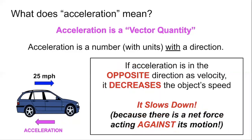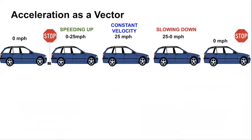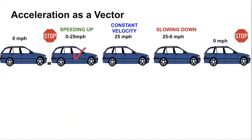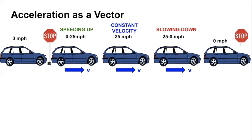Let's apply this. Here's our familiar example of a car at a stop sign that then speeds up to 25 miles an hour, moves at a constant velocity of 25 miles an hour for some time, then slows down from 25 miles an hour back to rest. Let's look at velocity and acceleration vectors. In each case — speeding up, constant, and slowing down — the object is moving to the right, and the direction of velocity always points in the direction the object is moving through space. Now, for the speeding-up case: the car is speeding up, therefore the acceleration is in the same direction as the velocity — also to the right — causing it to speed up.